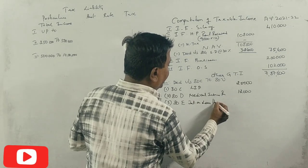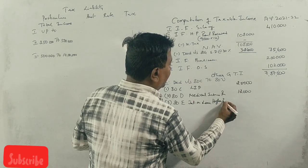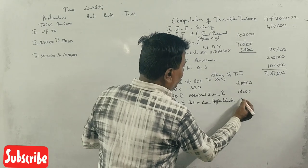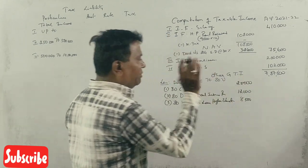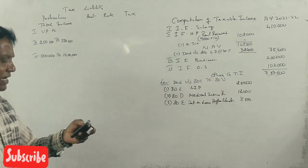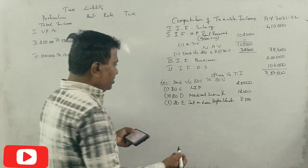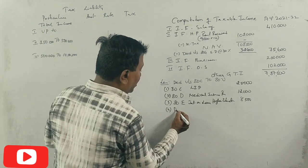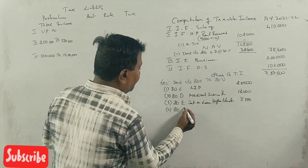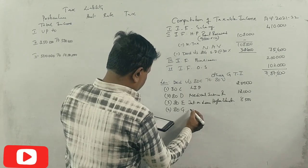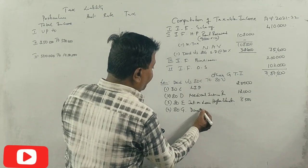Next, under Section 80E, interest on loan for higher education. There is no upper limit, so 8,500 is allowed.